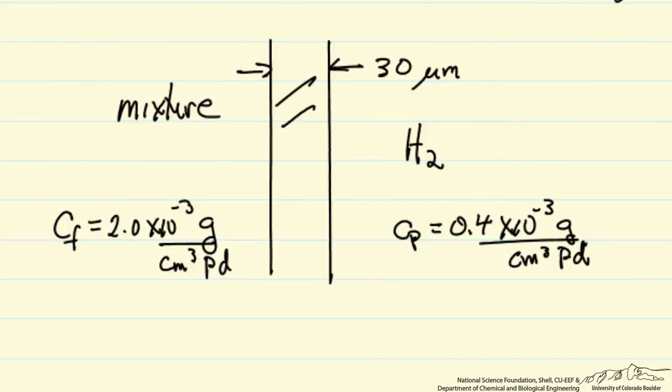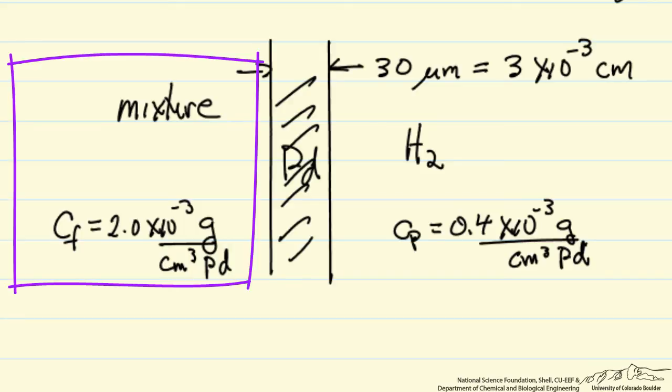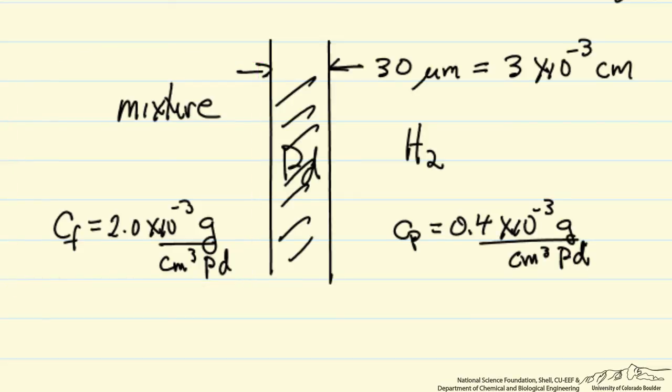So this is our membrane, the palladium, 30 microns thick which is 3 times 10 to the minus 3 centimeters to be consistent units. We have a mixture on the left side that is at higher pressure than the right side which is essentially pure hydrogen.